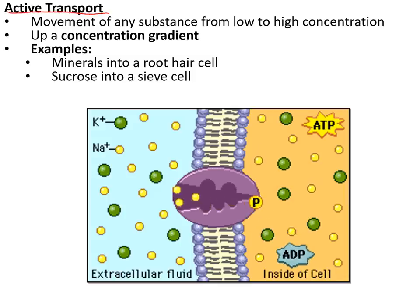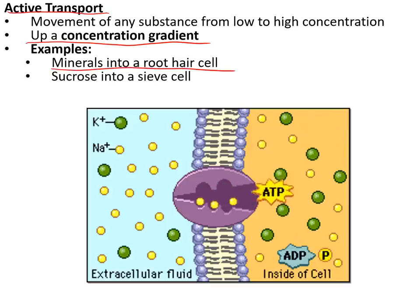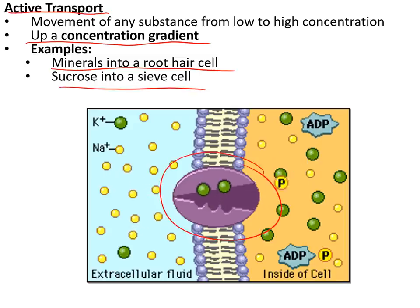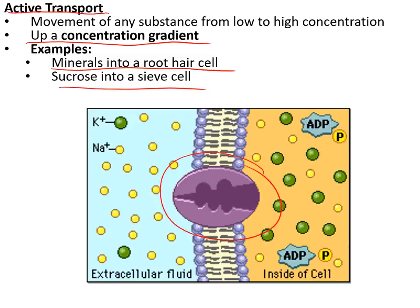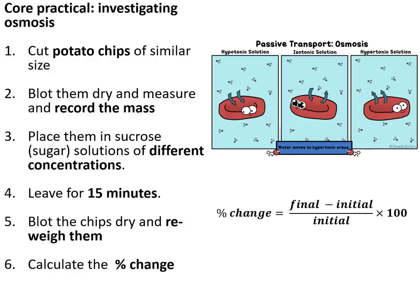Active transport moves substances from low concentration to high concentration, up a concentration gradient — for example, how minerals go into roots from the soil, or how sucrose enters sieve cells. There are proteins in the cell membrane that grab molecules from the low-concentration side and move them to the high-concentration side using energy.